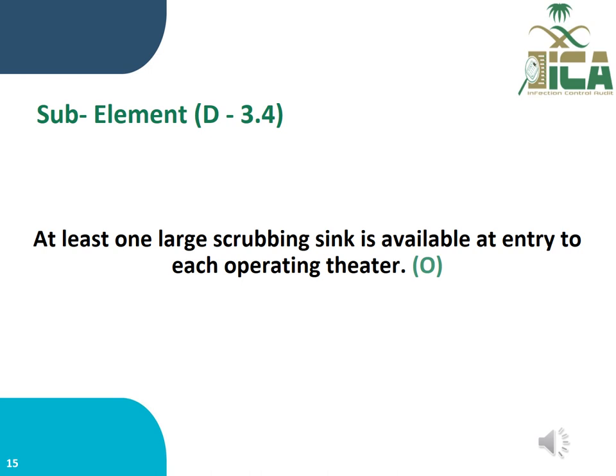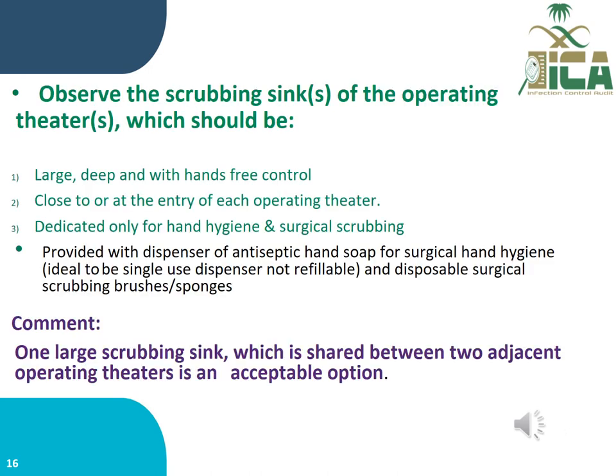Sub-element D3.4: At least one large scrubbing sink is available at the entry to each operating theater, and this is done by observation. The scrubbing sink should be large, deep, and with hand-free control, close to or at the entry of each operating theater, dedicated only for hand hygiene and surgical scrubbing. It should be provided with a dispenser of antiseptic hand soap — ideally single-use, not refillable — and disposable surgical scrubbing brush and sponge. One large scrubbing sink shared between two adjacent operating theaters is an acceptable option.